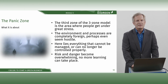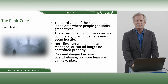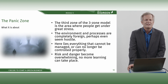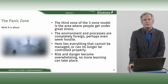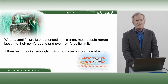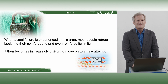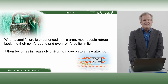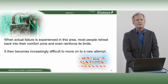The panic zone. The third zone of the three-zone model is the area where people get under great stress. The environment and processes are completely foreign, perhaps even seem hostile. Here lies everything that cannot be managed or can no longer be controlled properly. Risk and danger become overwhelming, and no more learning can take place. When actual failure is experienced in this area, most people retreat back into their comfort zone and even reinforce its limits. It then becomes increasingly difficult to move on to a new attempt.